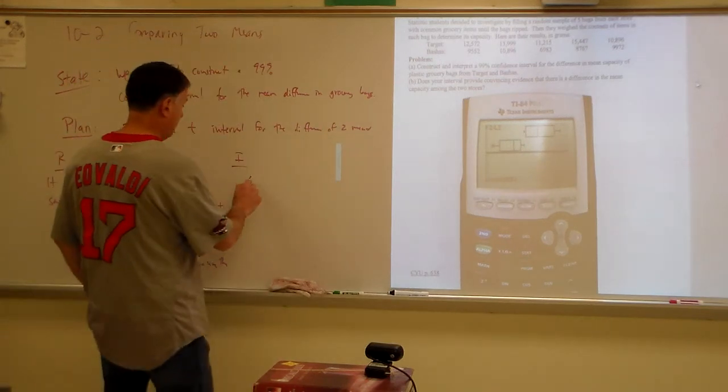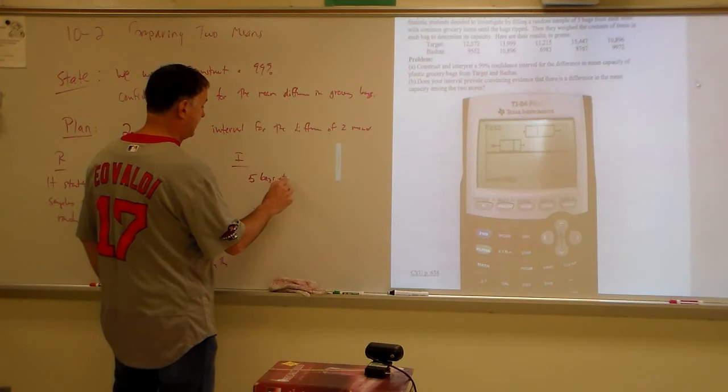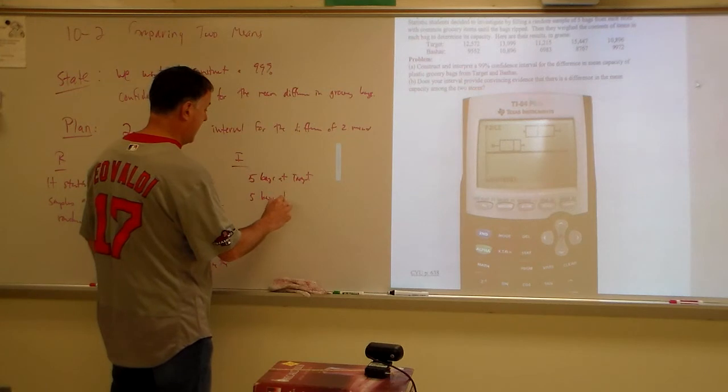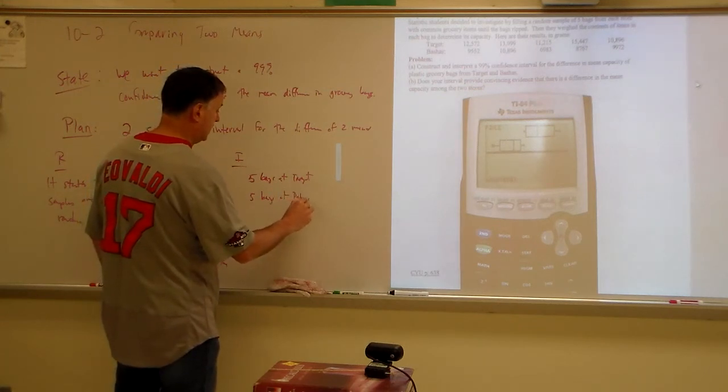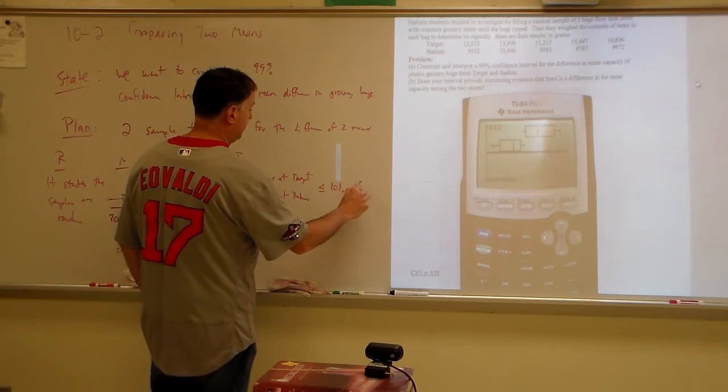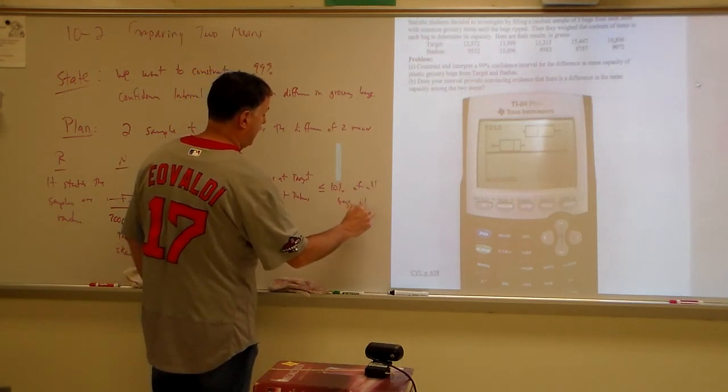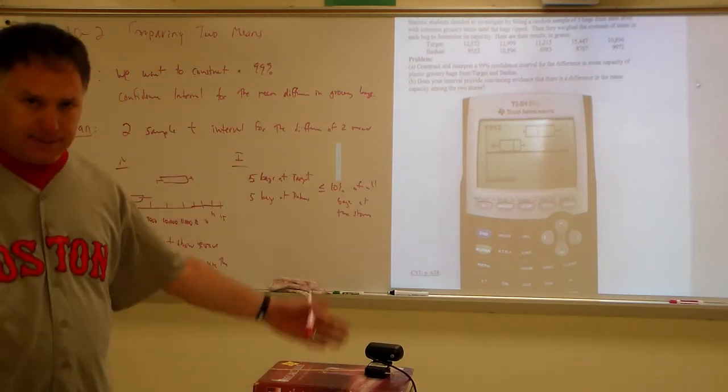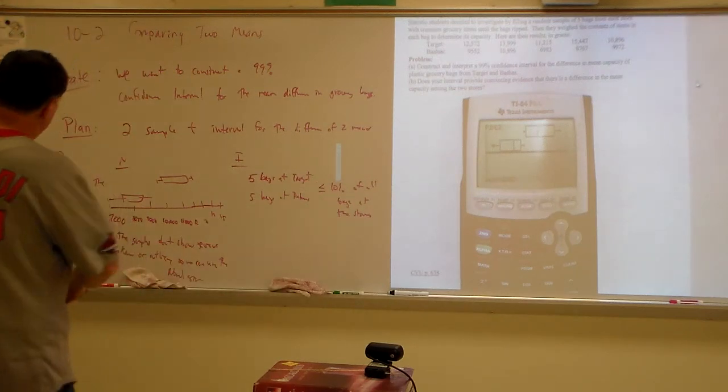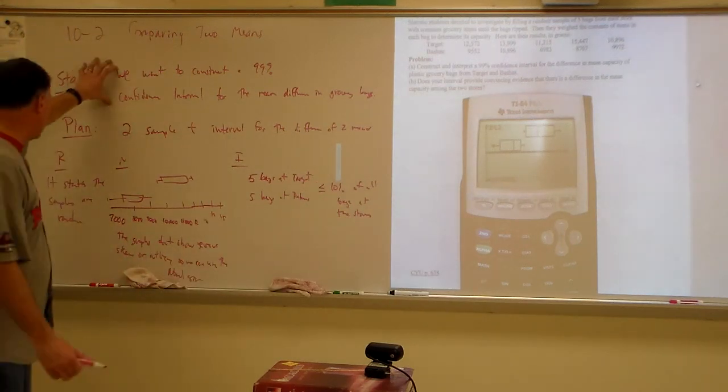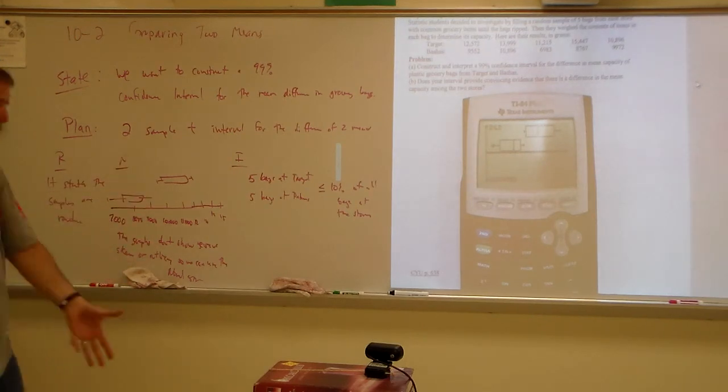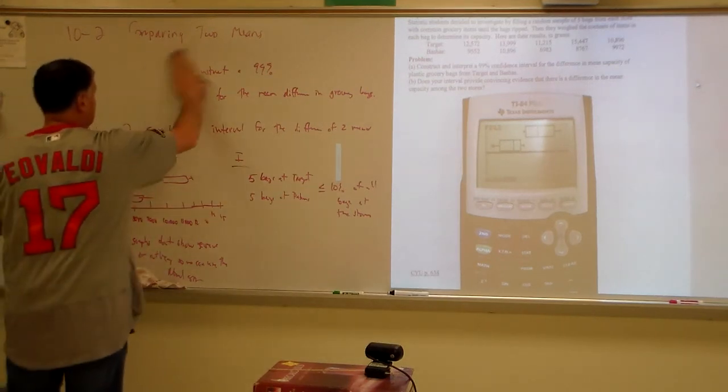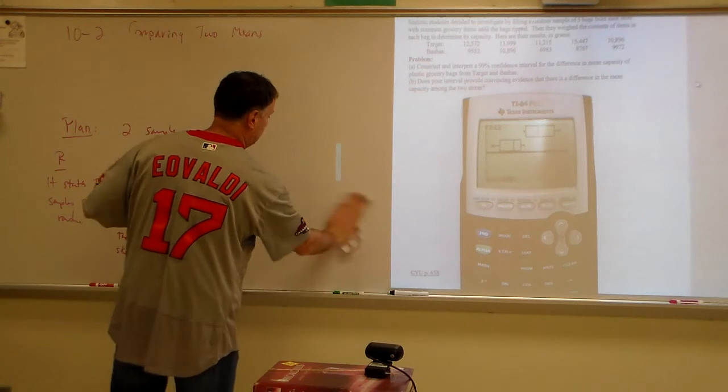And then, underneath it, you would say, if the graphs don't show severe skew or outliers, so we can use the normal approximation. Now, we do independent, 10% condition. Five bags at Target and five bags at Bashes is less than or equal to 10% of all bags at the stores. That's a really good job on our state and our plan, and now we've got to do our do part. We've got to do the do.